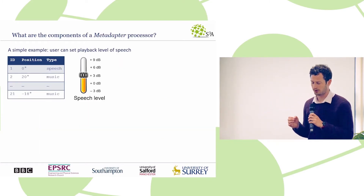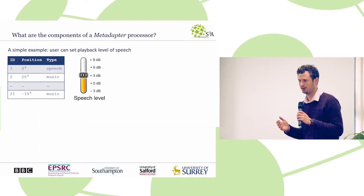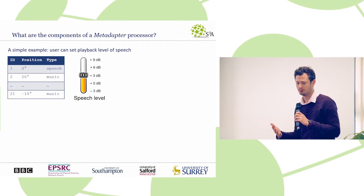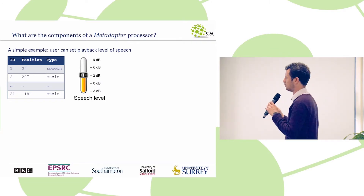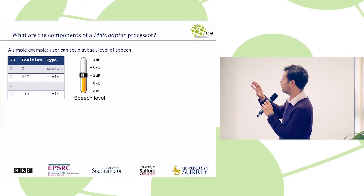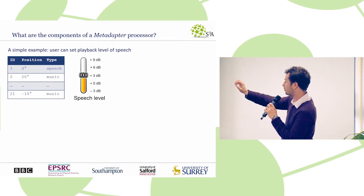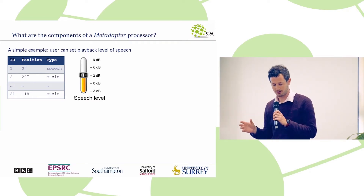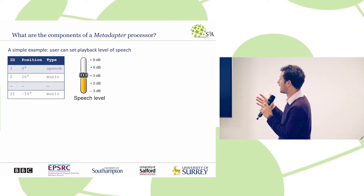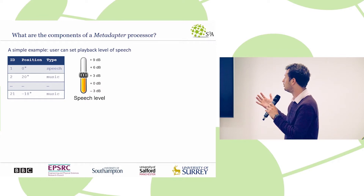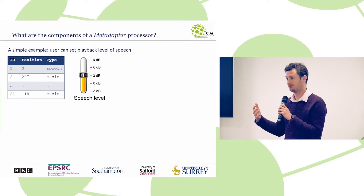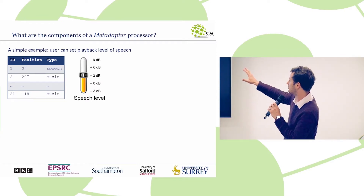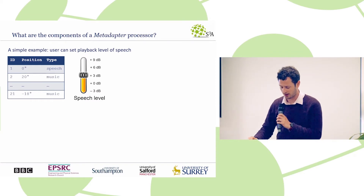I'm going to talk through a simple example of metadata adaptation and show how we'd implement that in the framework. We've got a set of audio objects and some metadata that has the core metadata like position, but also some semantic metadata — in this case a very simple description of whether something is speech or music. The application here is the user setting the playback level of speech in the reproduction, so we have a simple user interface element where the user can set speech level.